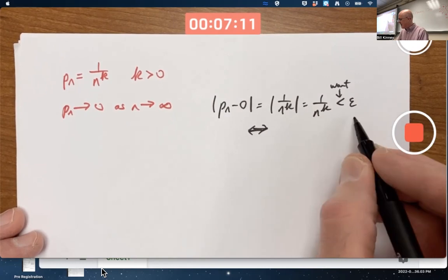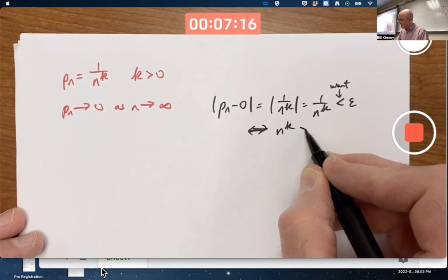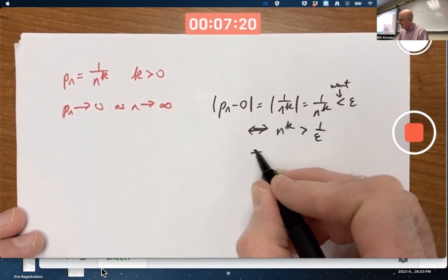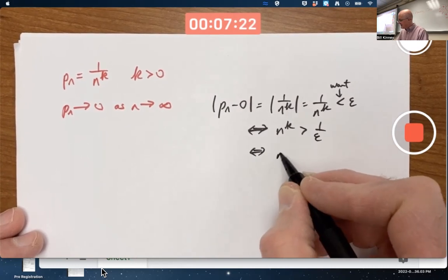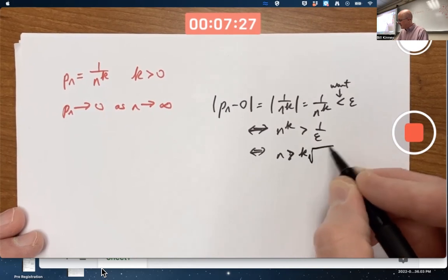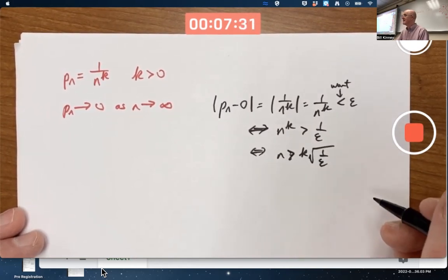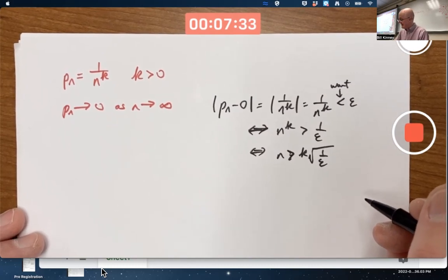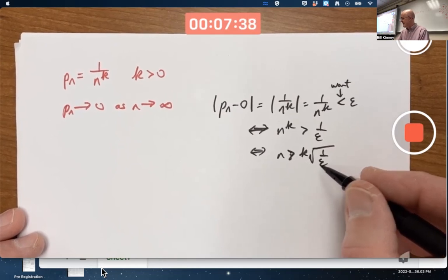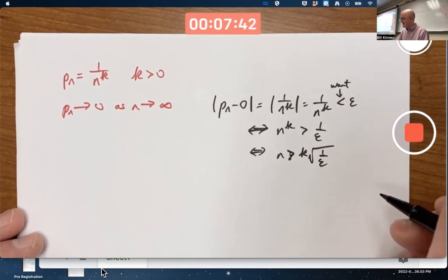You'd want to essentially solve this inequality for n. You could take the reciprocals of both sides. That does change the direction of the inequality, and then you could take the kth root of both sides, and you could say you want to choose n to be bigger than the kth root of 1 over epsilon. If epsilon is a really tiny number, 10 to the negative 100 or something, 1 over that's going to be really big, 10 to the positive 100. The kth root could be small or relatively large depending on how big k is.